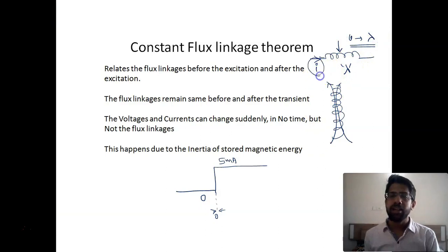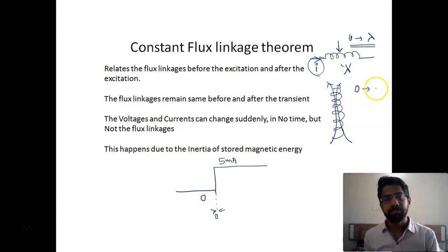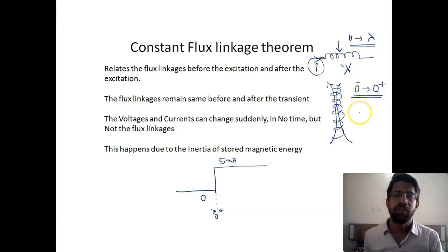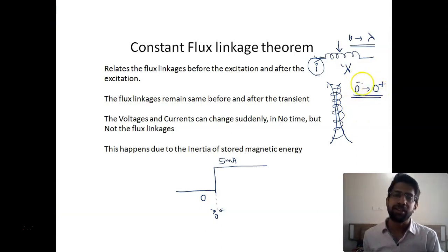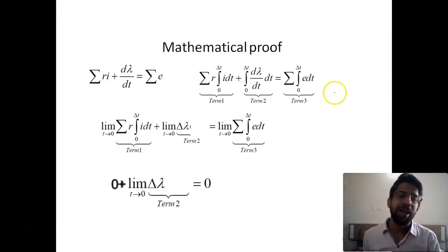The excitation here is the current i. Just before the excitation the flux was zero, and just after the excitation — even if current i is flowing through the circuit — the flux linkage should still be zero. This is the constant flux linkage theorem. We will see in detail how this theorem affects currents and voltages in the circuit, but first we will see the mathematical proof.